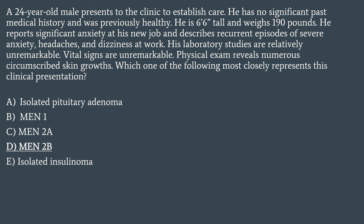MEN2A could have had the pheochromocytoma, but instead of the marfanoid presentation, you would have had a parathyroid presentation. Whether hyperplasia or adenoma, they would have given you excess calcium — maybe stones, bones, and groans — the classic hypercalcemia presentation. But you would not have had the findings that clue you in to MEN2B.